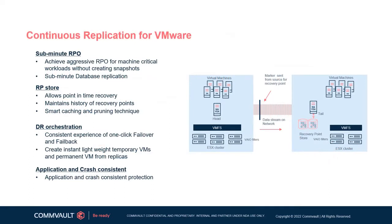With continuous replication for VMware, Commvault brings its replication capabilities to a completely different level by replicating VM changes in near real-time. This feature competes with and will replace DR competitors like Zerto and even VMware's SRM. Its use case is to capture potential customers that are looking for aggressive RPOs, especially for mission-critical apps.